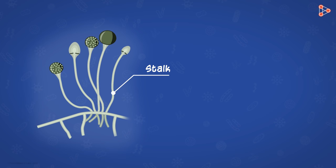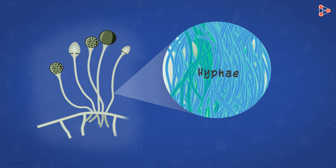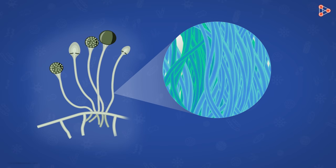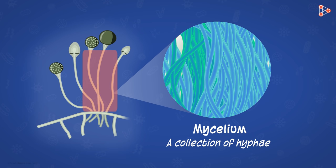Now moving to the stalk. This usually consists of long slender filaments — these filaments are the cells that make up the entire fungal body. They form a dense network together. Scientifically, they are addressed as the hyphae, or singular hypha. These threads get interwoven to form a network, and this structure is what we call the mycelium. So the mycelium is a collection of hyphae, and the fungal body is made up of mycelium. Thus this stalk and also these root-like structures are all mycelium made up of hyphae.